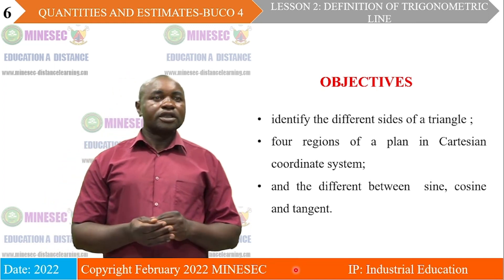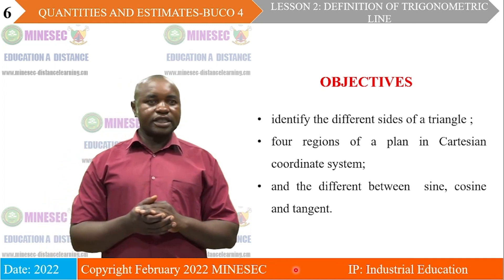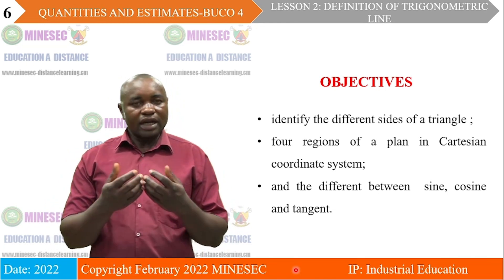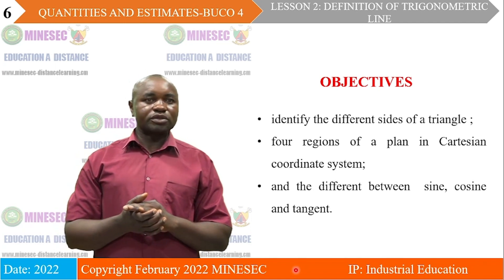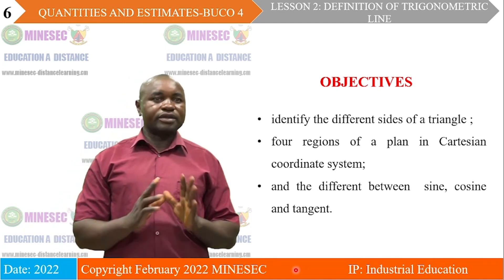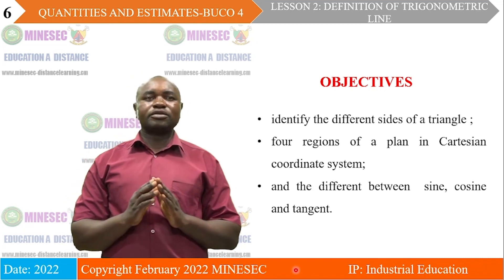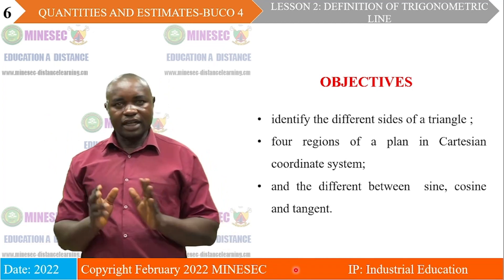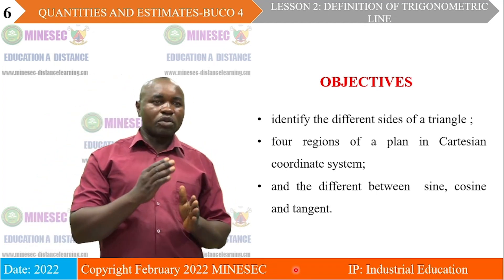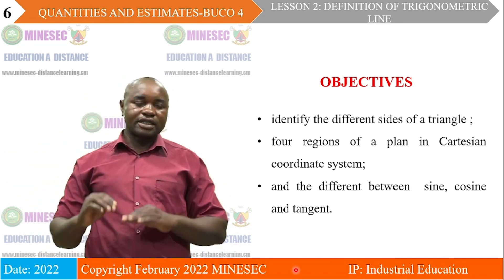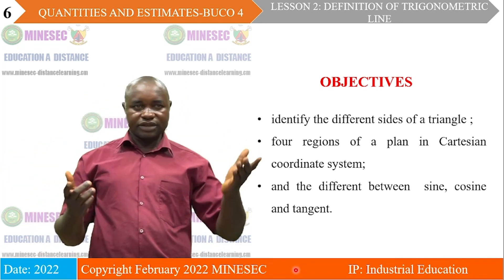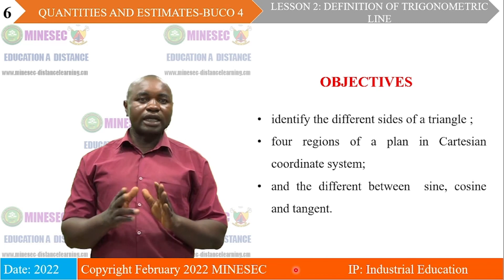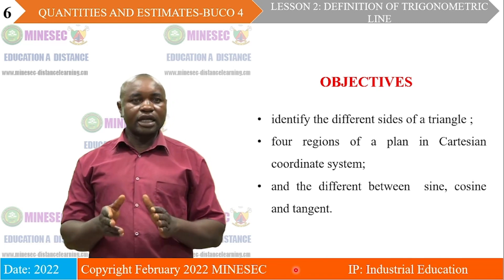At the end of this lesson, we are going to be able to identify the different sides of a triangle — that is what we call the opposite side, the adjacent side, and the hypotenuse. We will also know the four regions of a plan in the Cartesian coordinate system.